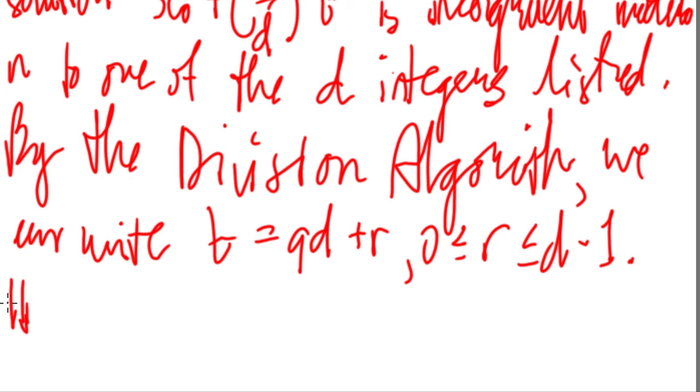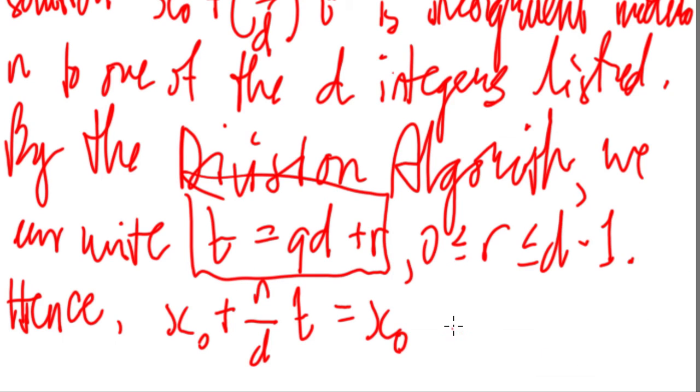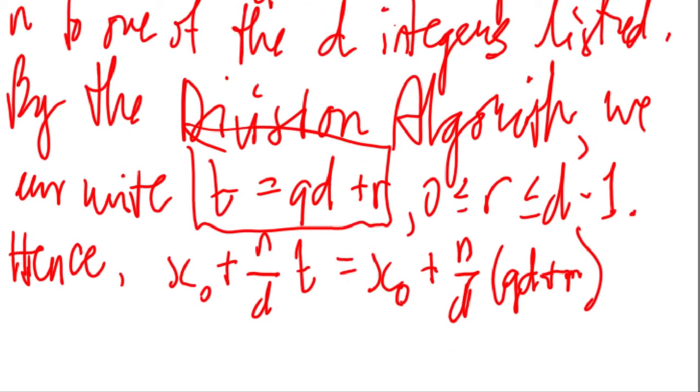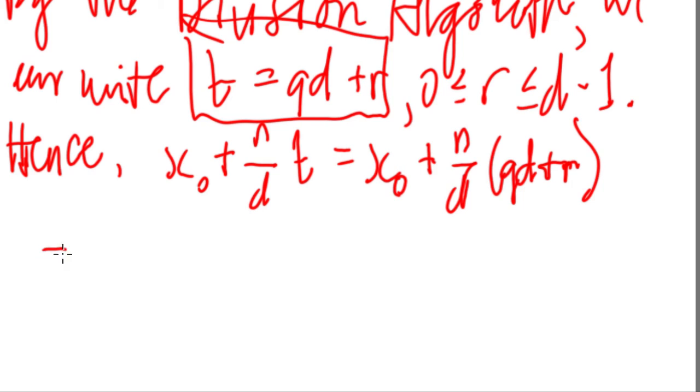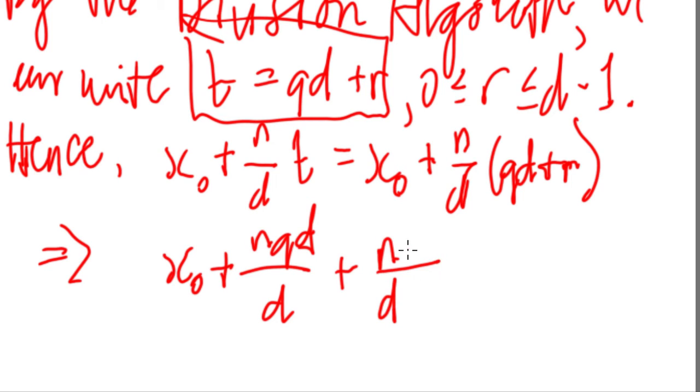So hence we say x sub 0 plus n over d times t equals x sub 0, substituting the value of t which is qd plus r, so plus n over d times qd plus r. So by substitution what we have is x sub 0 plus qd over d times n plus n times r over d. So cancel the d's here. So this will lead us to have x sub 0 plus nq plus nr over d.